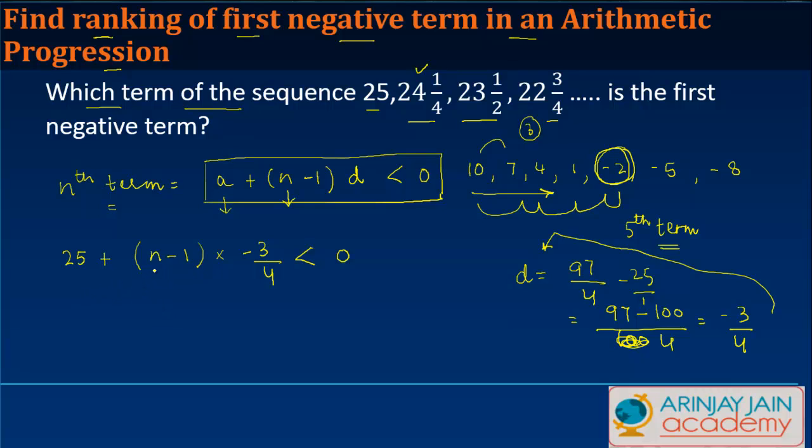Solving this for the value of n, what do we get? We get 100 plus 3n... 103 minus 3n is less than 0, or simply 3n is greater than 103.